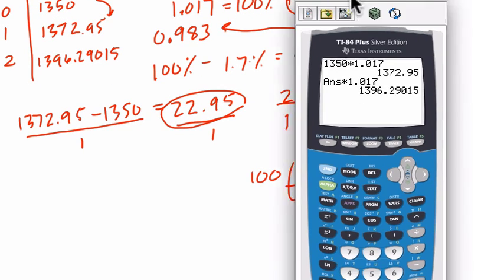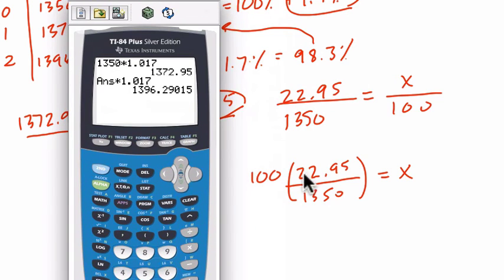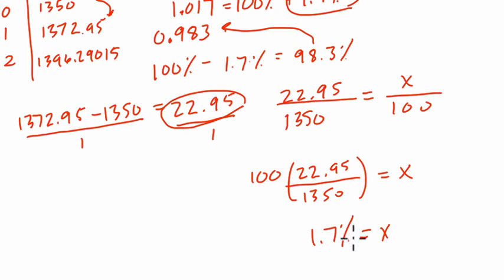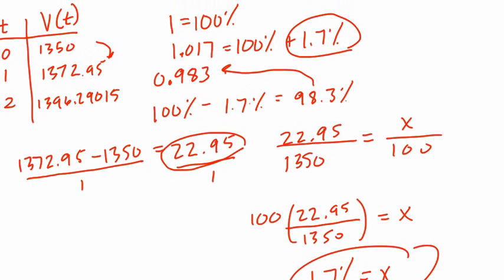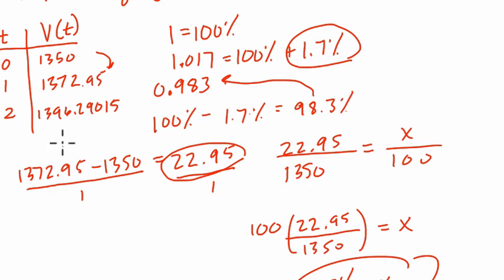So we can just do that calculation. 22.95 times 100 is 2295, the decimal moves to the right two times, and we divide it by 1,350. And you can see here that it's a percent change of 1.7. We gained 1.7%. That's a way of thinking about it by just making a table, finding how much you added onto it, and then taking that amount out of the beginning value. Any interval you look at, you want to take it out of the starting value in that interval and solve for a percent.